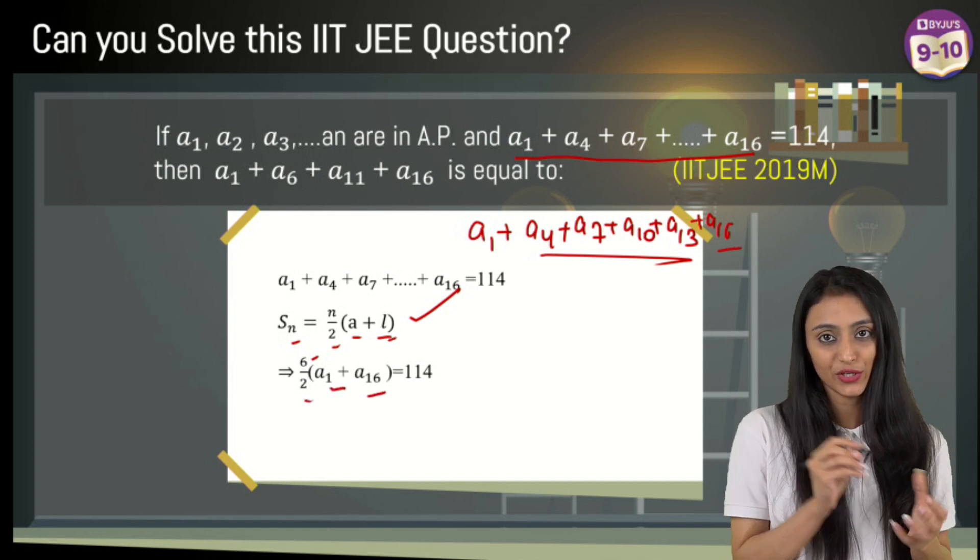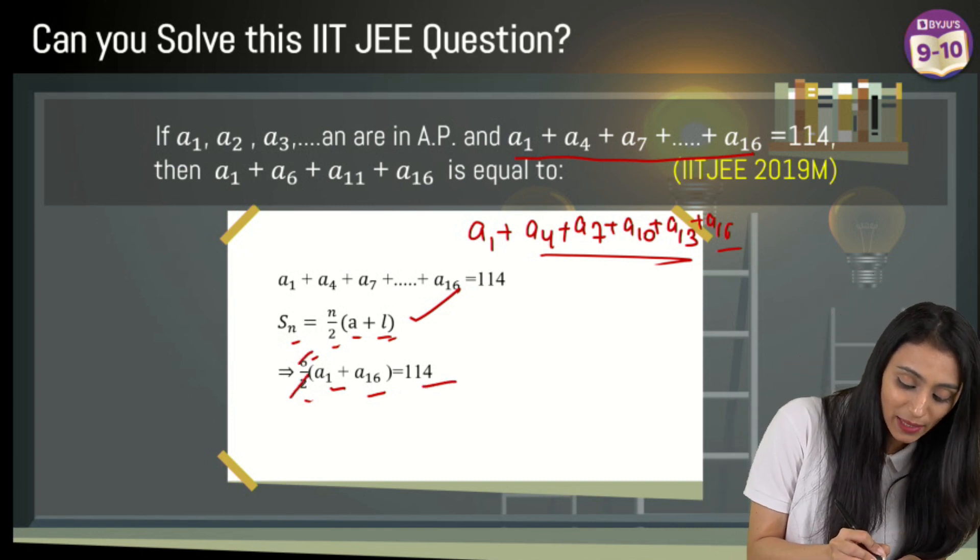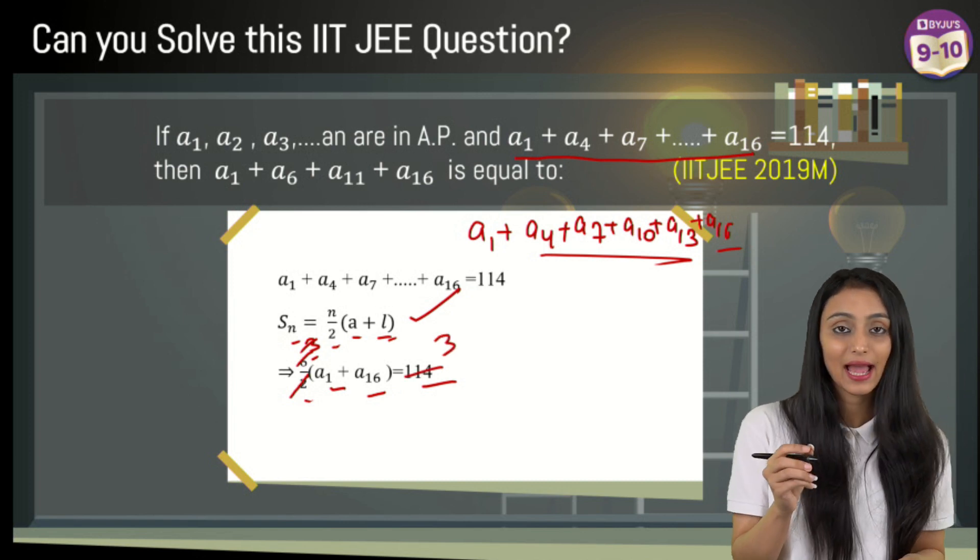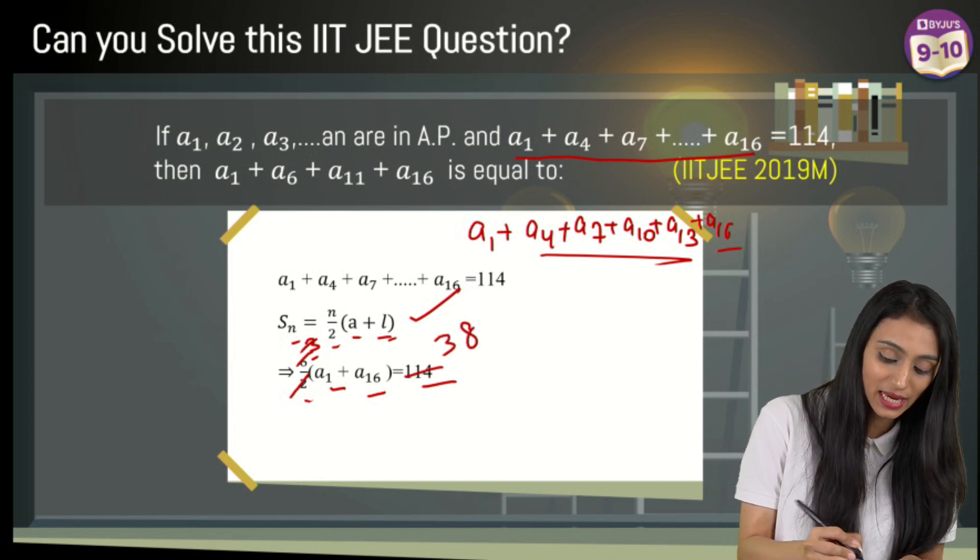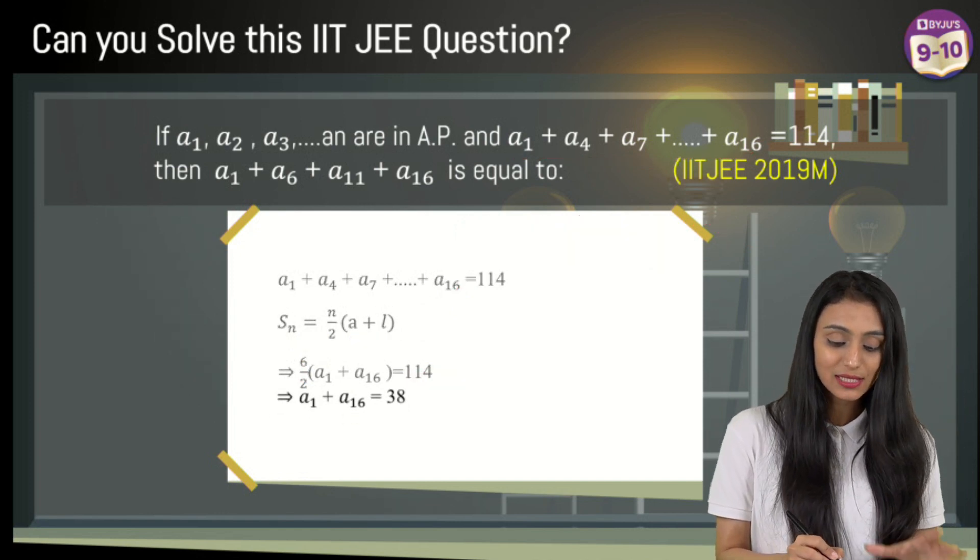So 6/2(a₁ + a₁₆) = 114. This is 3(a₁ + a₁₆) = 114. This becomes 3 times 38 equals 114. So a₁ + a₁₆ = 38. This is the result I'm getting.